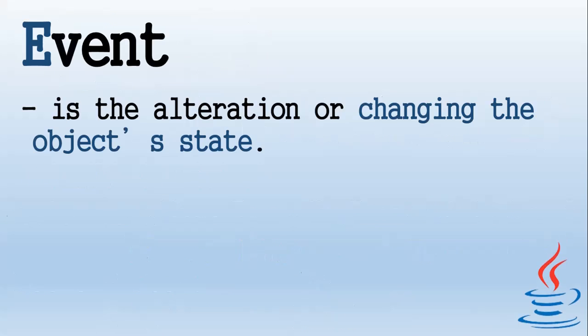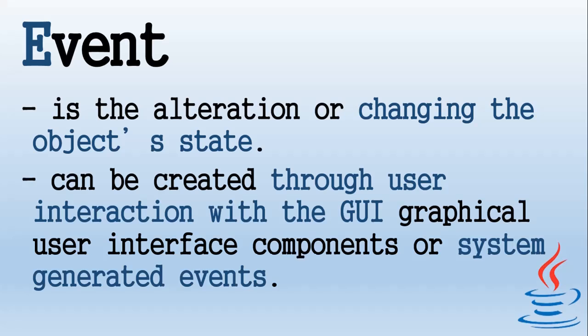Let's begin with event. An event is the alteration or change in an object's state. Events can be created through user interaction, graphical user interface components, or system-generated events. Examples of events include clicking a button, moving a mouse, entering a character through the keyboard, or selecting an item from a list.